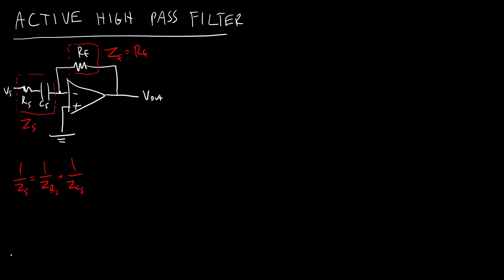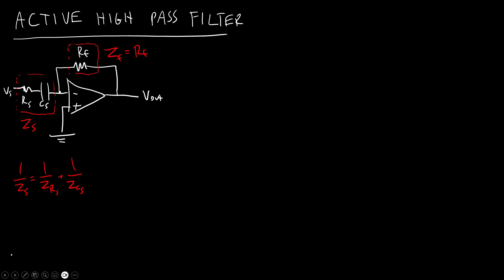So I am not going to write out all of the algebra again, but just like we did in the previous slide for the active low-pass filter, we can rearrange this to solve for ZS. We can say, okay, this basically just looks like an inverting amplifier and plug in our impedance values. And if you do that, you're going to get the equation V out equals negative J omega CS RF all over 1 plus J omega CS RS times VN.